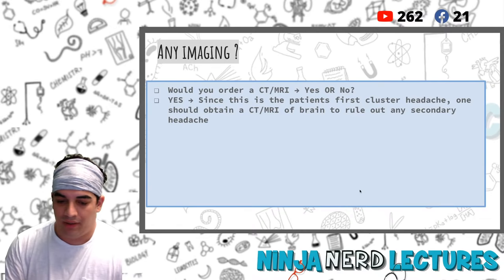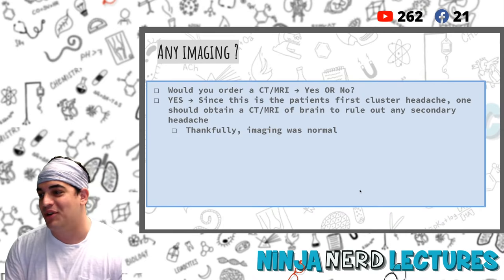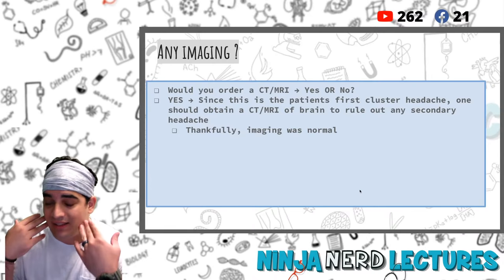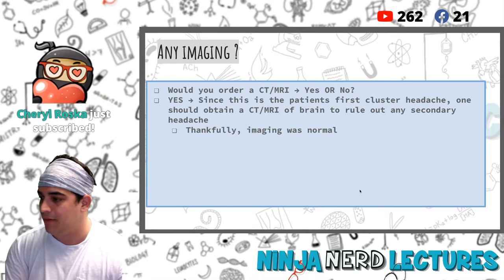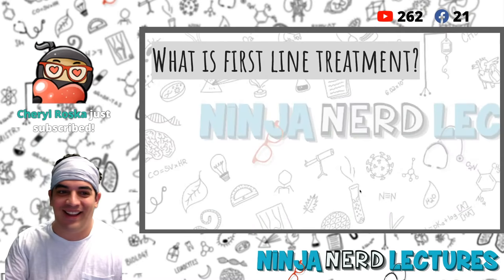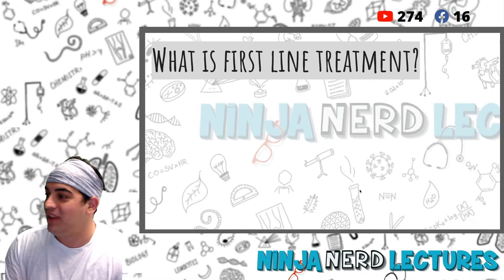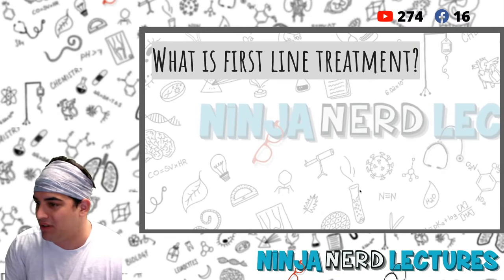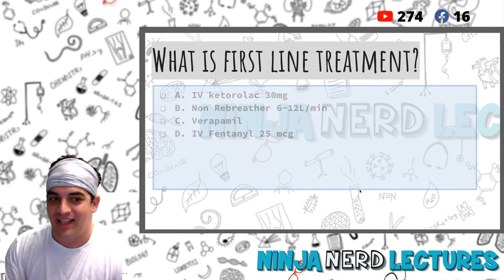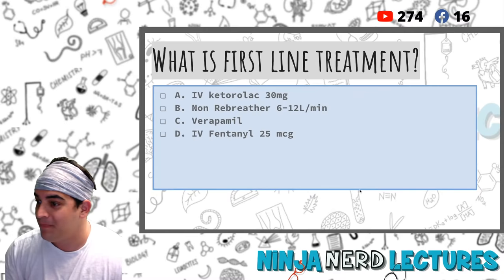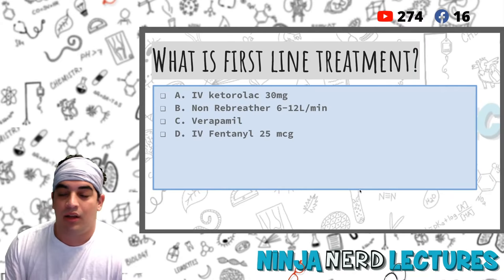Thankfully the imaging was normal - no structural lesions, no dissections, no mass effect, no cranial pathology of any kind. So the diagnosis is cluster headache. Now that we've ruled out secondary causes, what is the first-line treatment? Options: ketorolac (NSAID), non-rebreather mask, verapamil (calcium channel blocker), or fentanyl (opioid) - which would you choose?